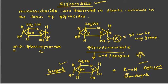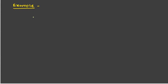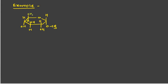Let me draw a few examples of glycosides derived from glucose and fructose using the Haworth form. Here is a glycoside derived from D-glucose with an OCH₃ group at the anomeric carbon and CH₂OH at the end. The name of this glycoside is methyl alpha-D-glucopyranoside.